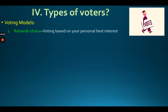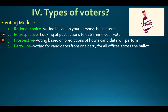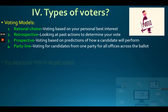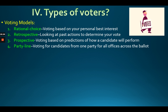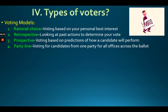Write these down and have them memorized. Rational choice voters vote based on their own personal interest — for example, voting for someone because they'll cut your taxes or provide free community college. If you vote for your own personal interest, you are a rational choice voter.